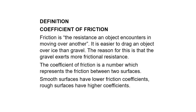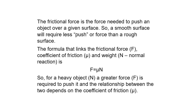Smooth surfaces have lower friction coefficients; rough surfaces have higher coefficients. The frictional force is the force needed to push an object over a given surface — a smooth surface will require less force than a rough surface. The formula that links the frictional force F, coefficient of friction mu, and weight N (normal reaction) is: F equals mu N. So for a heavy object N, a greater force F is required to push it, and the relationship between the two depends on the coefficient of friction, mu.